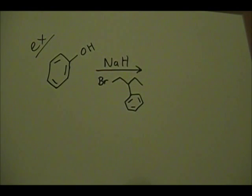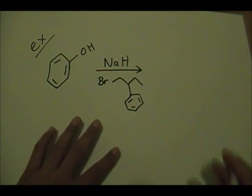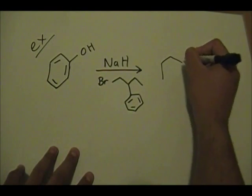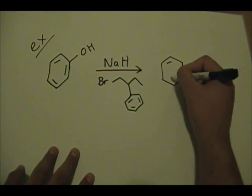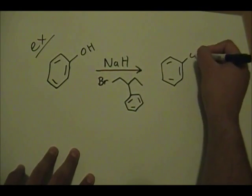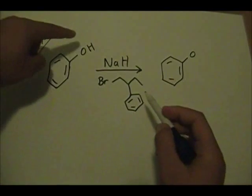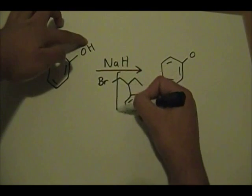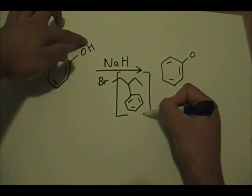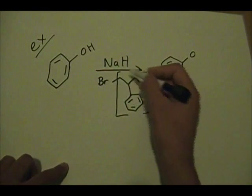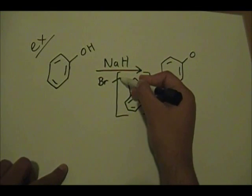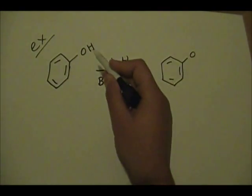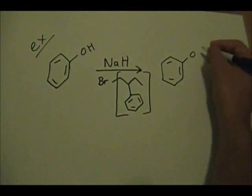The product of this reaction will be - you still have your aromatic ring and your oxygen there. The only thing that happens is you replace the H with this piece here, including this carbon that's going to bind to this oxygen. That's the piece that replaces the H.